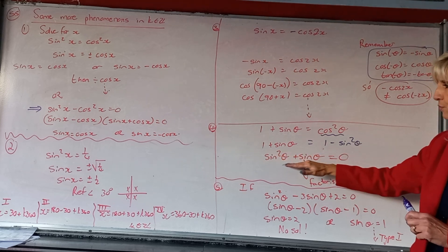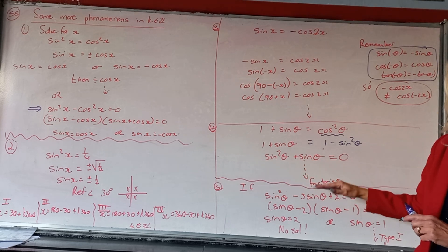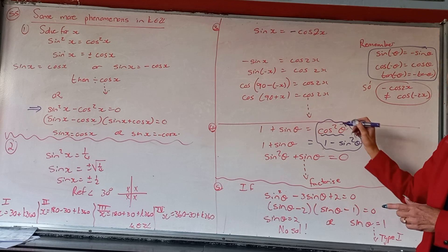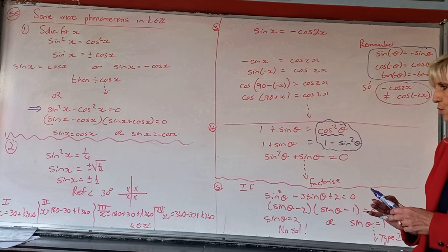Which will then bring me to a quadratic equation where I can now factorize and do type 4. So there is always the solution that you can change the cos squared into 1 minus sin squared, or 1 equal to sin squared plus cos squared.